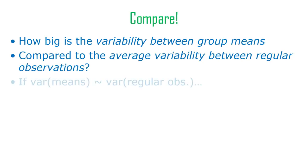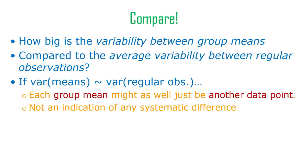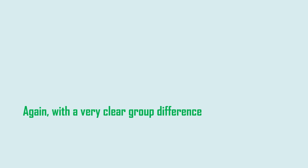We compare the variability between the group means to the average variability between regular observations. If the variability of the means is about the same as the variability of regular observations, then each group mean might as well just be another data point, and the variation between them is just the kind of variation we would expect all the time from any data point. So the difference between group means doesn't actually tell us anything about a systematic difference — our hypothesis is probably not correct, and soil acidity doesn't seem to matter.